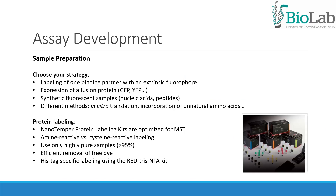Regarding sample preparation, the first step is to choose your labeling strategy. Options include expression of a fusion fluorescent protein or labeling one binding partner with an extrinsic fluorophore. Nanotemper has protein labeling kits optimized for MST that you can choose depending on your protein — for example, amine-reactive, cysteine-reactive, or his-tag-specific labeling kits.